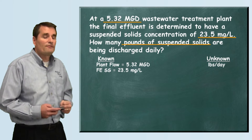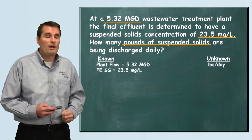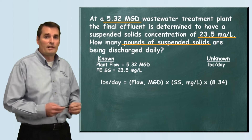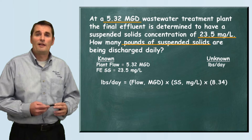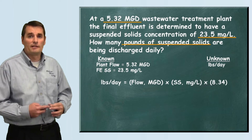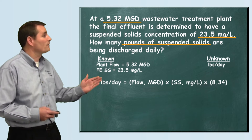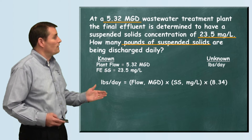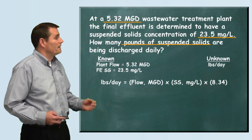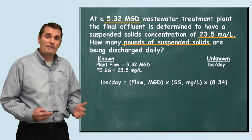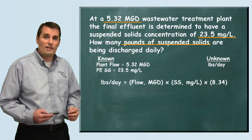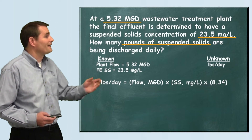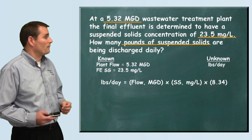Now that we've pulled that information out of the problem, we want to select our formula. It's the pounds per day formula: pounds per day equals flow in MGD times the suspended solids concentration in milligrams per liter times 8.34.